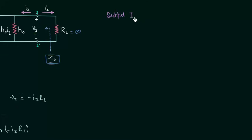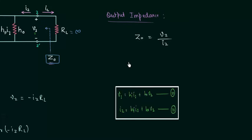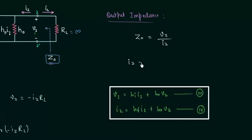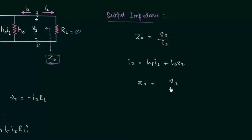From Ohm's law, the output impedance is equal to the output voltage divided by the output current. So Zo is equal to V2 divided by I2. From the H parameters equation, the output current I2 is equal to Hf·I1 plus Ho·V2. So we have Zo equal to V2 divided by (Hf·I1 plus Ho·V2).